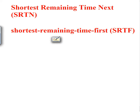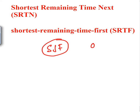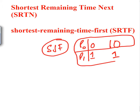Now we have Shortest Remaining Time Next, or SRTN — the preemptive version of Shortest Job First. We saw the convoy effect problem in SJF: when a process arrives at time zero with 10 units of burst time, and at time one a very short job comes in, you had no choice but to keep running P0. In SRTN, being preemptive, it doesn't mean a loaded process must run to completion — we can preempt it.